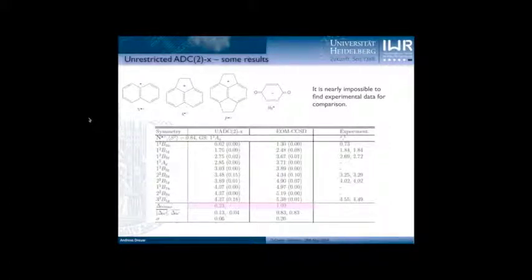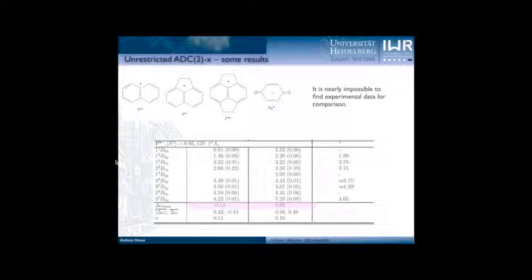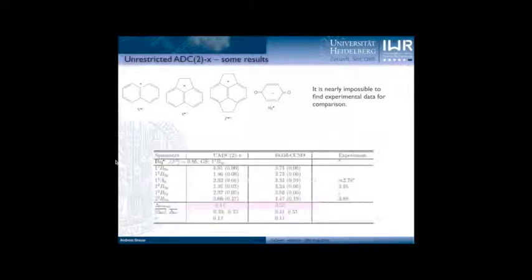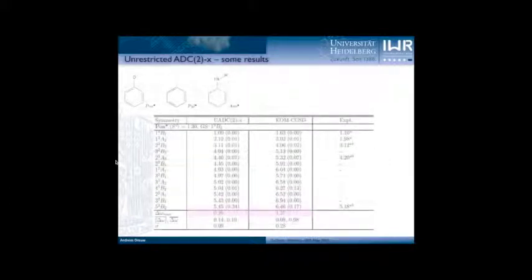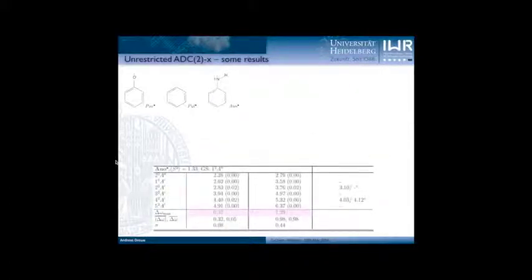We chose unrestricted EOM-CCSD because we have only an unrestricted ADC2 version available, and we thought it's not fair to compare this to more advanced cluster methods for open shell systems. Going through the tables, you will realize the ADC scheme has a very fortunate behavior — it usually underestimates, while EOM-CCSD tends to overestimate excitation energies. For other radicals like phenoxyl, phenyl, or anilino radical, we are actually quite close to experimental values. In total, unrestricted ADC2X performs very well for such medium-sized radicals.